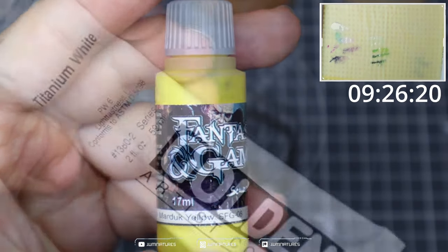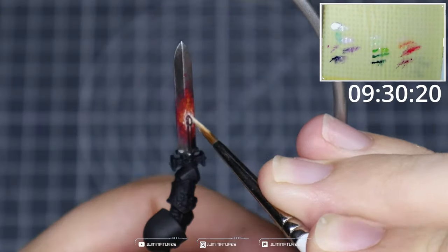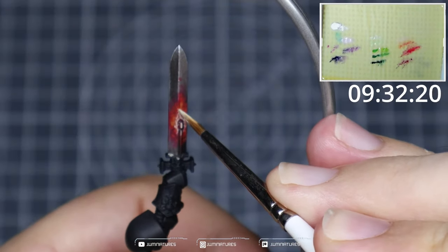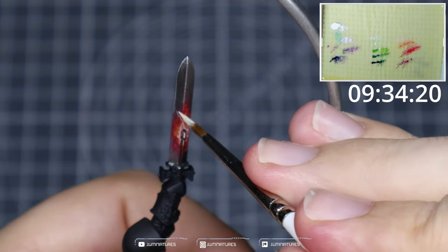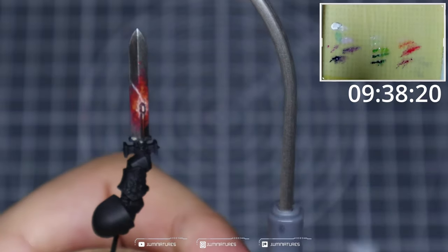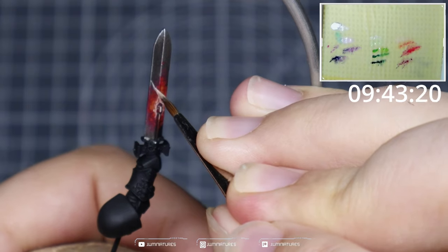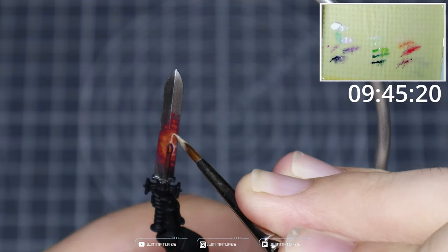If you want to do it with red, take some Khorne Red, Evil Sunz Scarlet, Yriel Yellow or really any yellow will work, and Titanium White. Again, build that gradient from your darkest color up into a mix of Evil Sunz Scarlet and your yellow. And then we come back in with our Titanium White and we create our lightning pattern again.